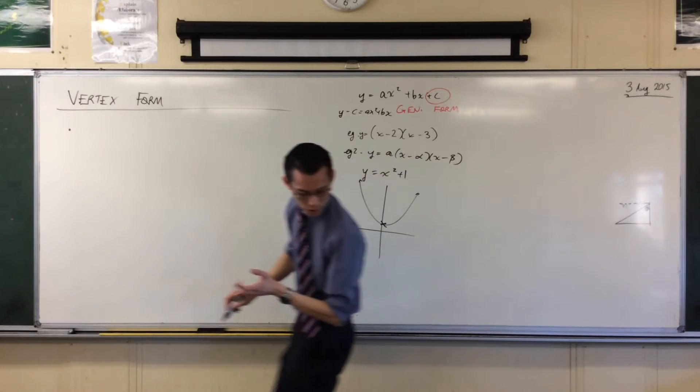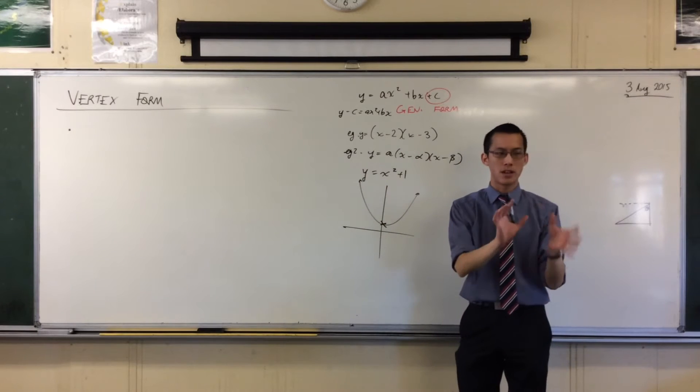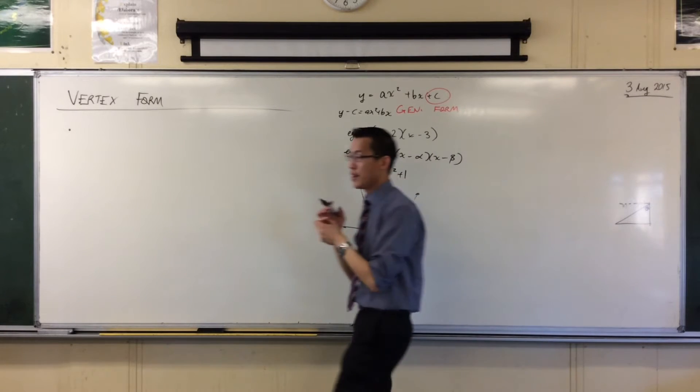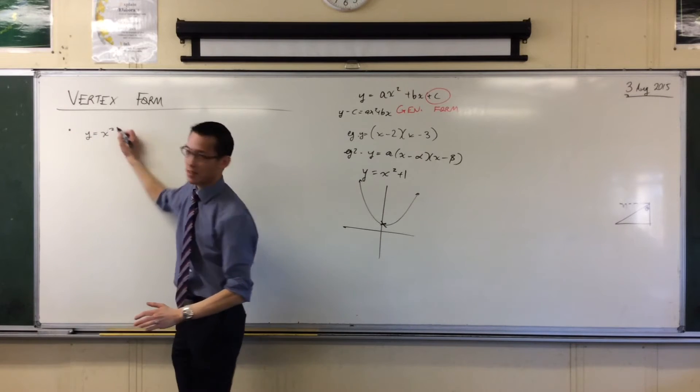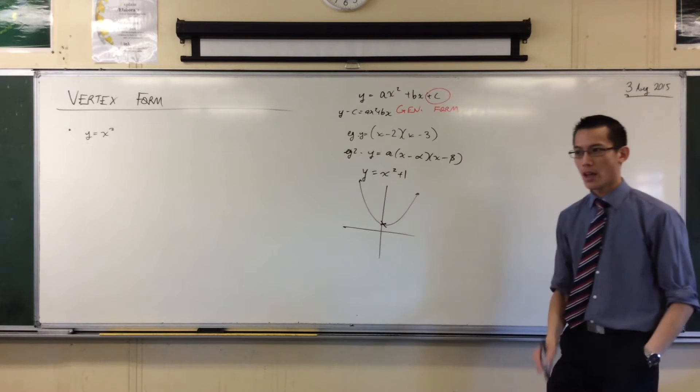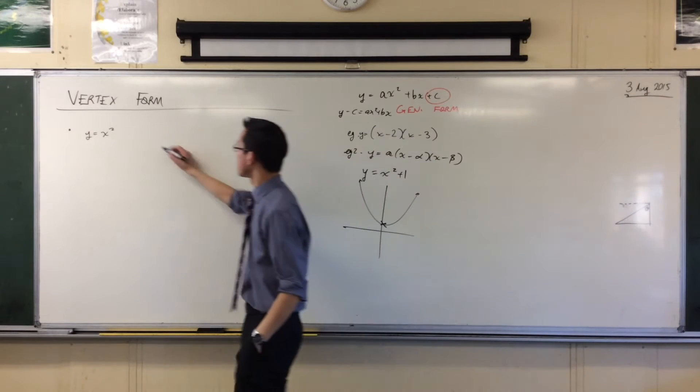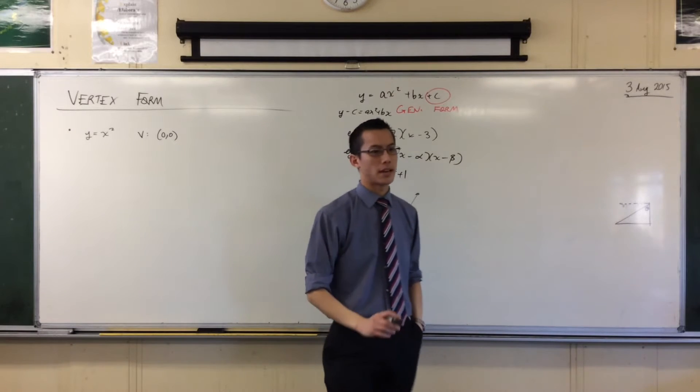I'm going to give you like six or seven different equations of parabolas and we're just going to investigate their different properties. So the standard vanilla parabola is y equals x squared and it has a vertex. Where's its vertex? It's at the origin, right? The vertex is at zero, zero. No big deal.